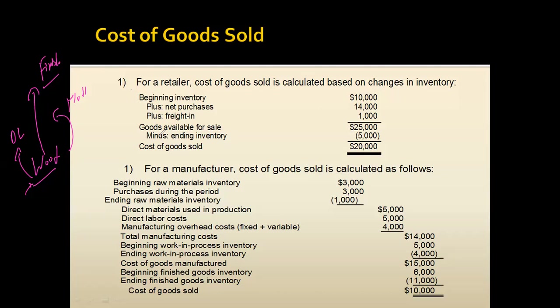Now we need to understand the formula for calculating cost of goods sold in a manufacturing company, and after that we will practice one question. Before going to the formula, let me give you a quick review of the key terminologies. Direct material is a cost that is traceable on a per unit basis — meaning we have an exact idea of how much we are spending for one unit of product.